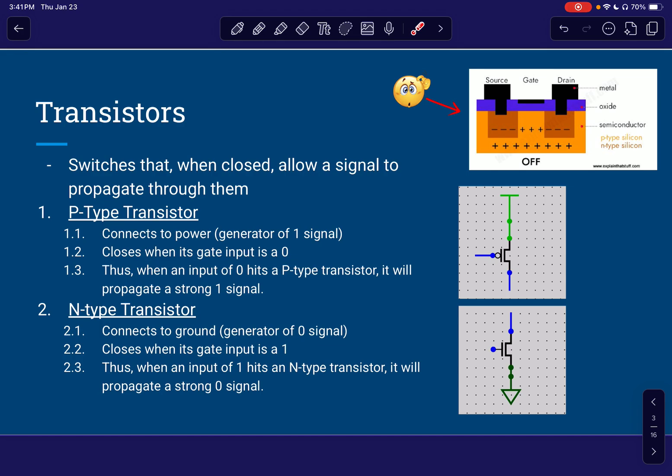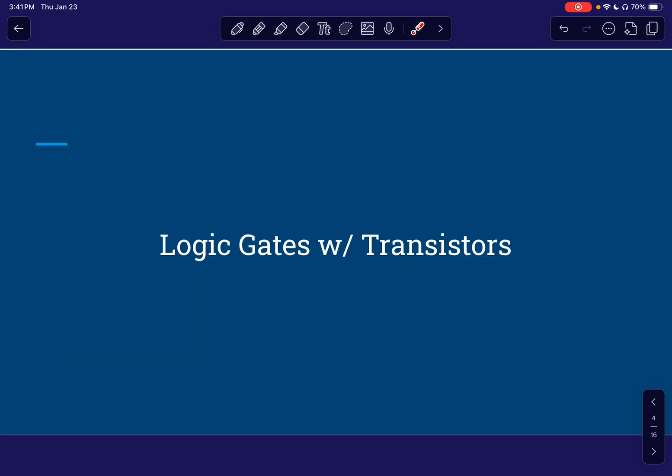So on the other hand, we also have the n-type transistors. And these n-type transistors connect to the ground, which is represented by this triangle right here. And as you can see, it's sending out that zero signal. And the n-type transistors close when its gate input, so when the thing that connects right here, is a 1. So we can thus say that when an input of 1 hits an n-type transistor, it will propagate the strong zero signal. This is very important. If you need to just kind of memorize what transistor does what, I think that would be very helpful.